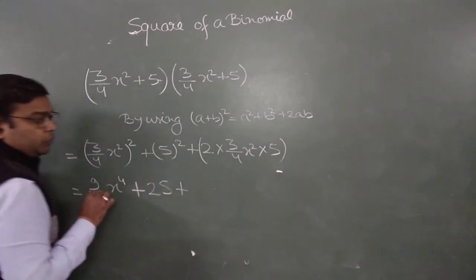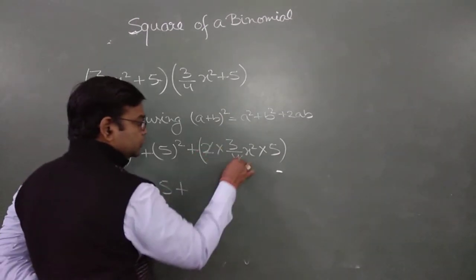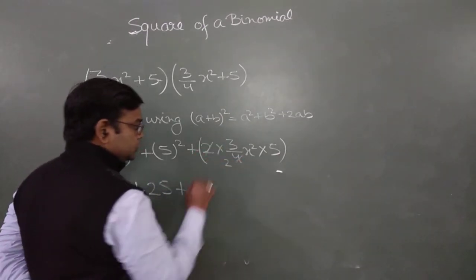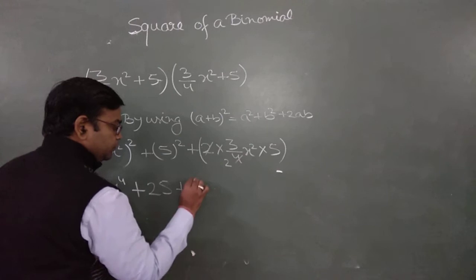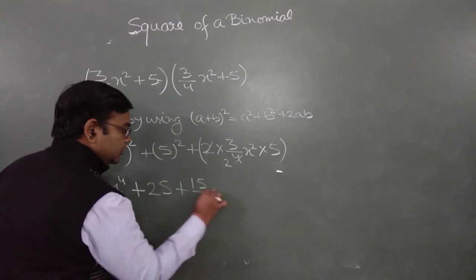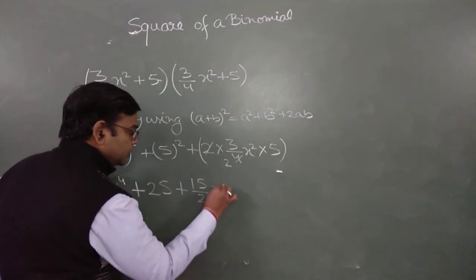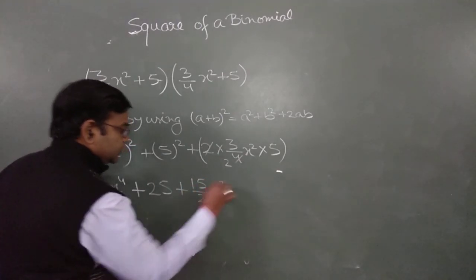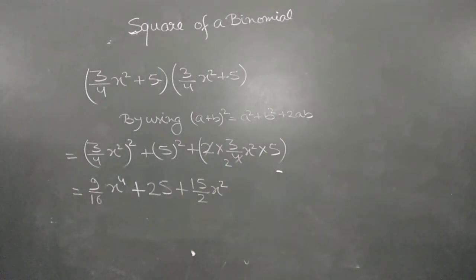For the 2ab term: 2 times 3/4 times 5 — the 2 and the 4 partially cancel, giving us 15/2 x², so the result is 9/16 x⁴ plus 25 plus 15/2 x².